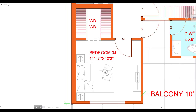Now we are going to bedroom number 4. You will see that it is a good-sized bedroom where you can easily put a bed and add a TV, cupboard, and almira. The dimensions are 11 feet by 10 feet 5 inches by 10 feet 3 inches.